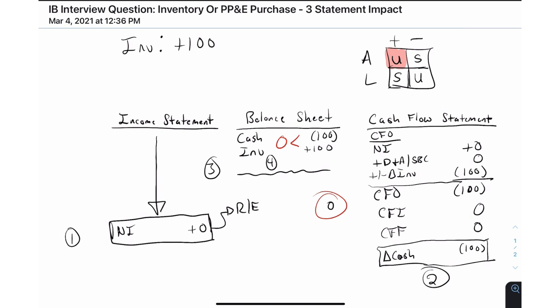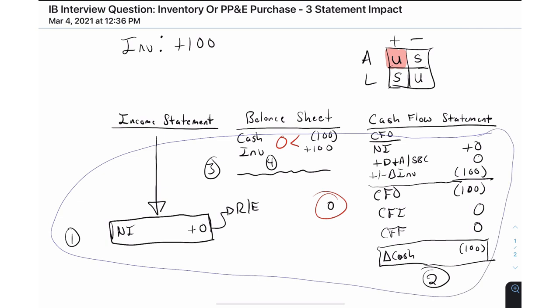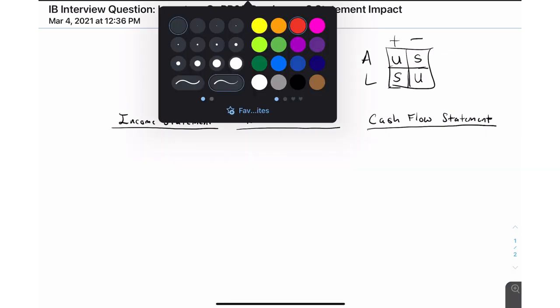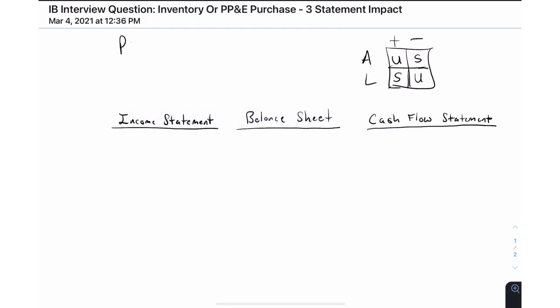Let's switch gears and assume that instead of inventory we purchase PP&E — property, plant, and equipment. These are things like your factory, your trucks, any kind of physical equipment. We're going to assume a $100 purchase again and go through the same four steps. There's a little trick here: over time this PP&E will be depreciated and will hit the income statement, but at the outset there's no expense.